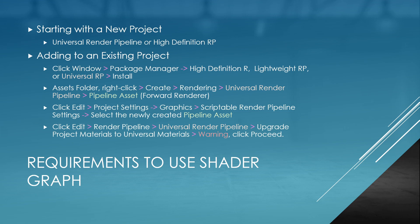Starting a new project is the easiest way — I'd rather you export your assets into a new project and select universal render pipeline or high definition render pipeline. But to add to an existing project, go to the top menu, click Window, go to Package Manager, and you'll get a new window. Select either the high definition render pipeline or universal render pipeline and click Install. I would use the universal render pipeline — specifically version 7.5.1 is the latest — so select it and click Install.